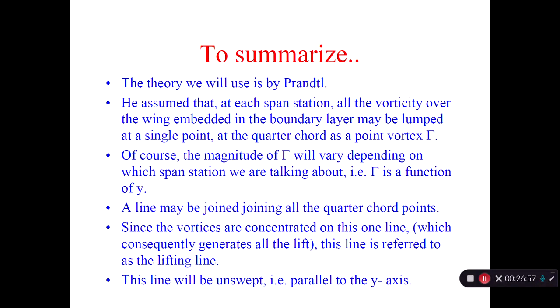So Prandtl assumed that at each span location, all the vorticity over the aerofoil is lumped in one point at the quarter chord point. The strength of that vortex is gamma. The magnitude of the gamma will change from point to point to point. Therefore, gamma is a function of y. A line may be joined joining all the quarter chord points. This line will be parallel to the y-axis. So we call that a lifting line. It will not be swept backward. It will not be swept forward. It will be perpendicular to the x-axis. By the way, x-axis is the flow direction.